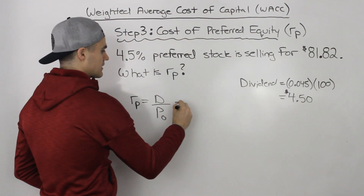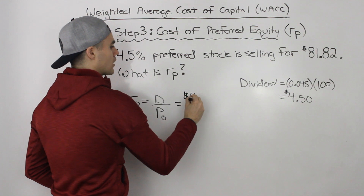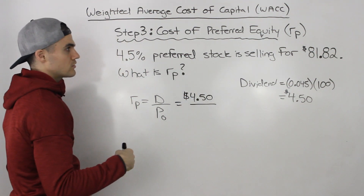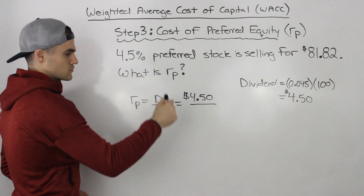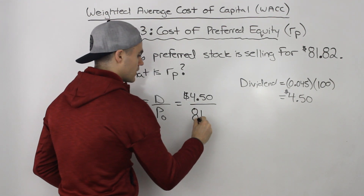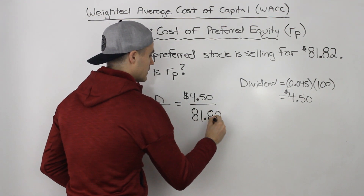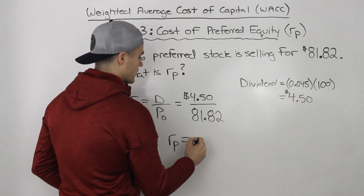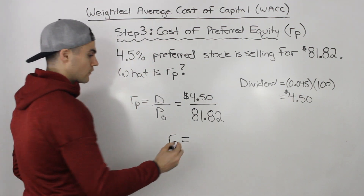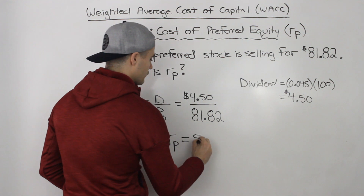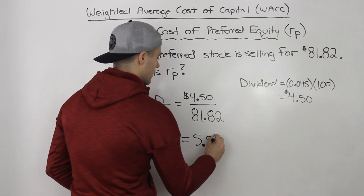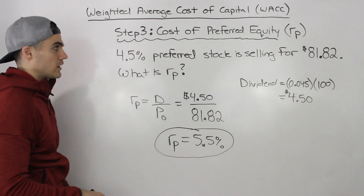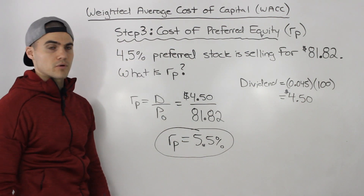Now we can input that into the formula. We have $4.50 as the dividend over the price, which is given as $81.82. When you do that calculation, you end up getting 0.055, or 5.5%. That represents the return on the preferred equity, or the cost of preferred equity.